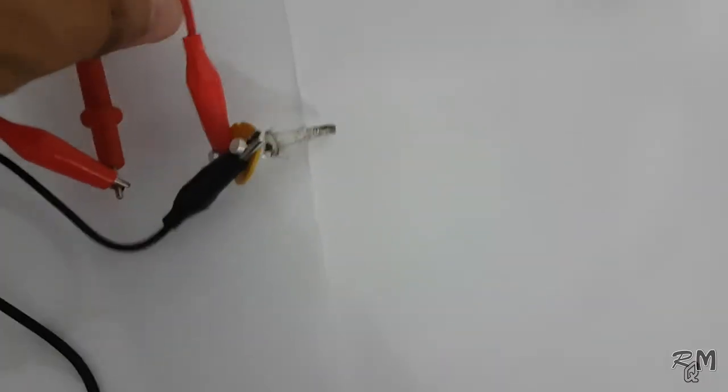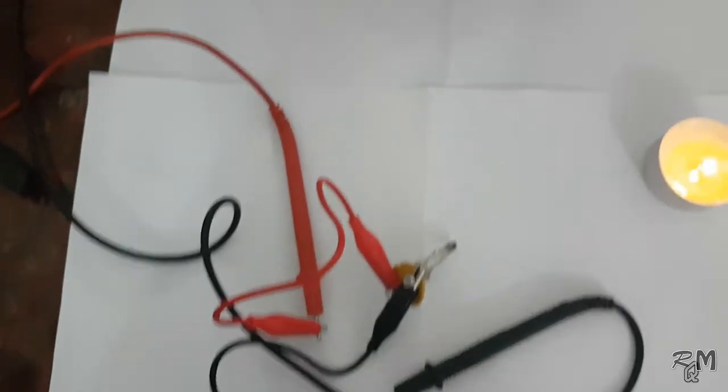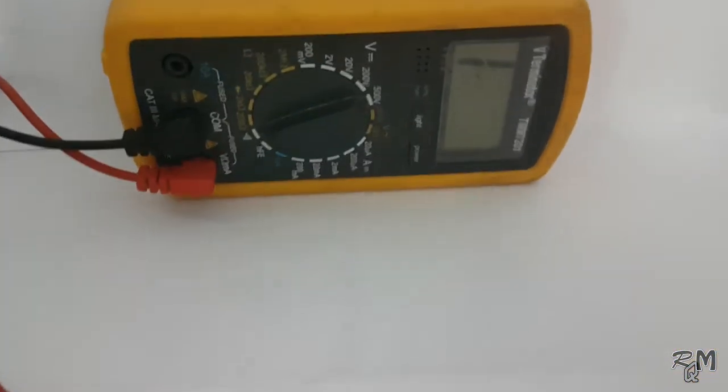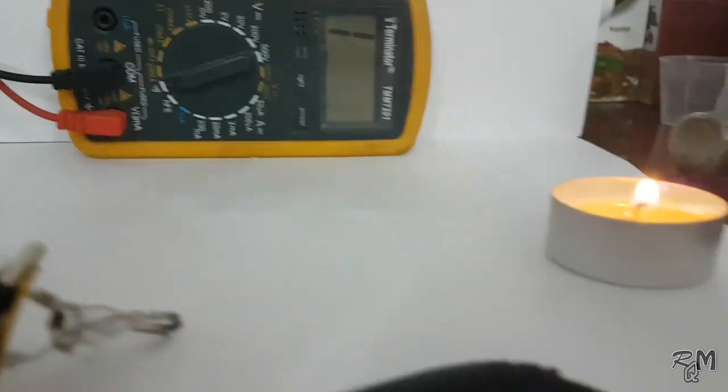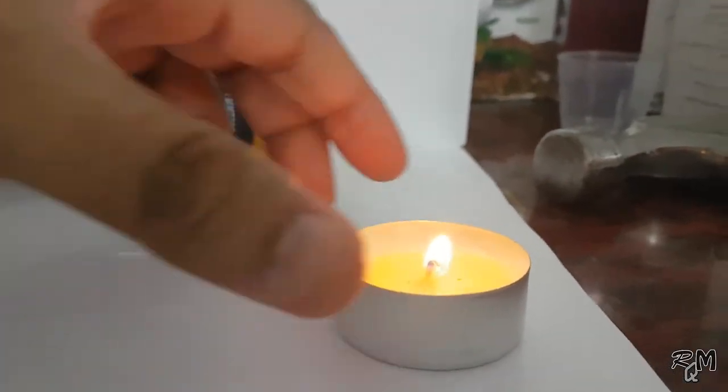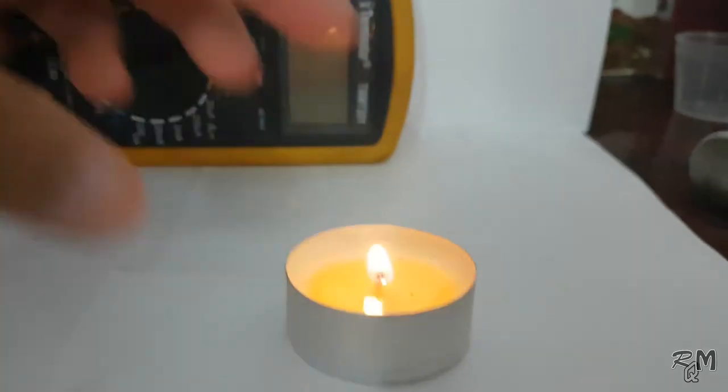Now for our experiment we need the bi-metallic contacts from the starter. Connect it with a digital multimeter. Keep the multimeter selection at continuity, and we need a low flame candle to simulate fire for our experiment.